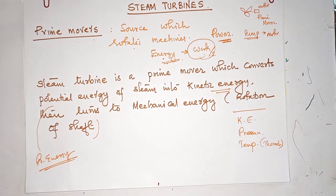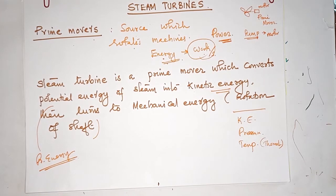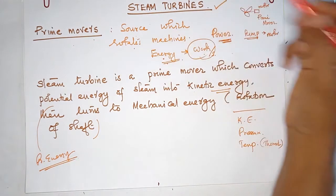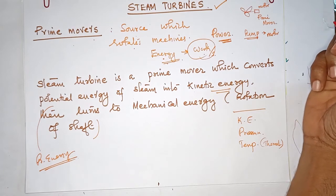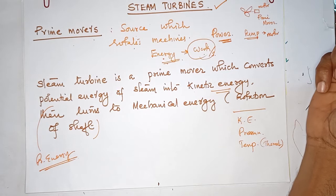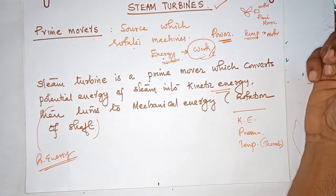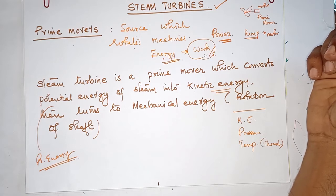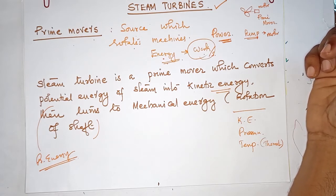Mechanical energy means mechanical work, which means mechanical power — shaft power, rotation. The final output is rotation of the shaft. Steam turbine is a very good equipment used in thermal power plants, solar power plants, and nuclear power plants. In all these new-generation power plants, the steam turbine is an essential component.